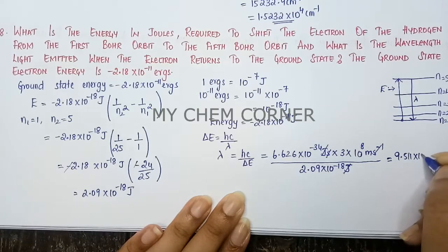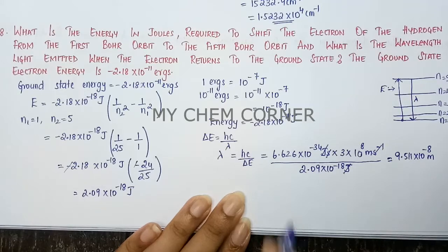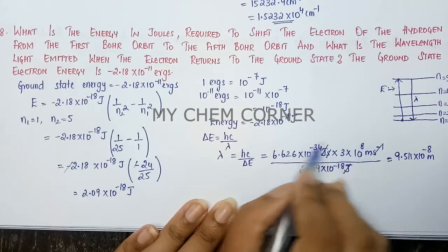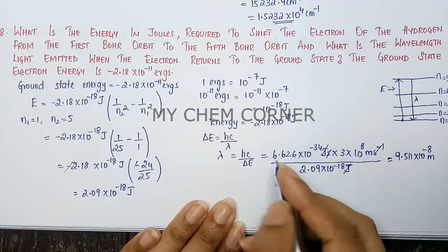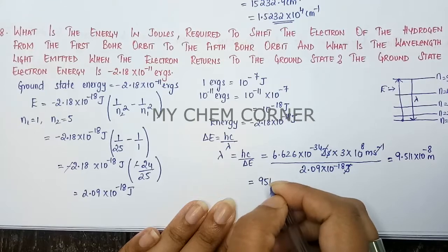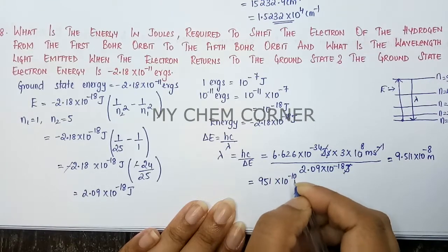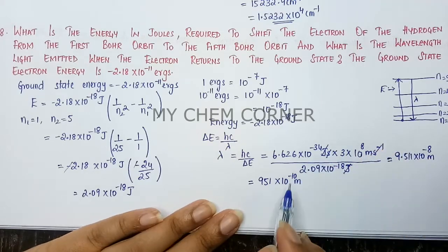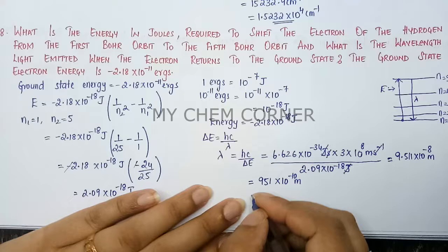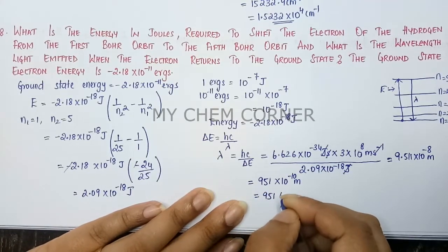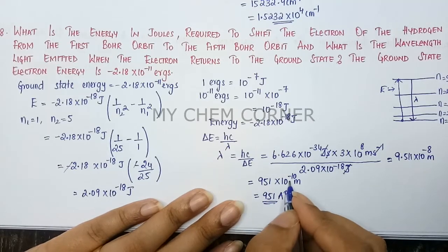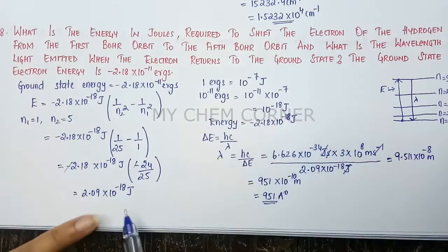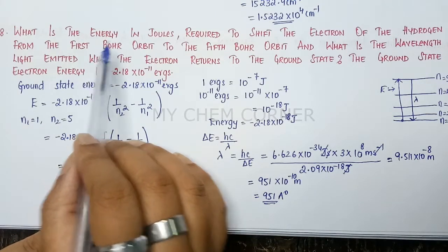Simplifying the numbers gives 9.511 × 10⁻⁸ meters (from the exponent calculation: −34 + 8 + 18 = −8). Converting: 9.511 × 10⁻⁸ m = 951 × 10⁻¹⁰ m = 951 angstroms, since 1 angstrom = 10⁻¹⁰ meters. So 951 angstroms is the wavelength when the electron returns to the ground state, and 2.09 × 10⁻¹⁸ joules is the energy for the first-to-fifth orbit transition.